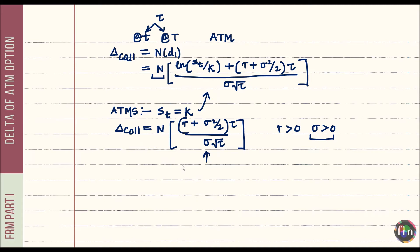We should qualify that rule: the delta of an at-the-money call is approximately 0.5 — not exactly 0.5. For it to be exactly 0.5, the term inside the bracket would need to be zero, because in a standard normal distribution the area to the left of zero is 0.5.